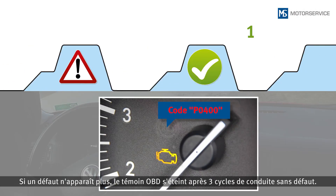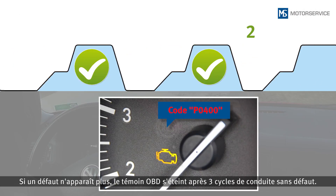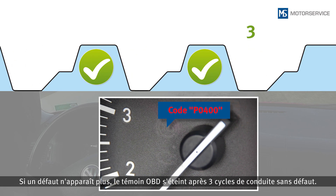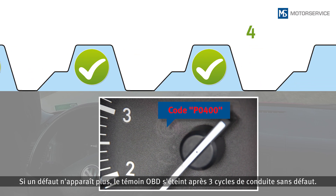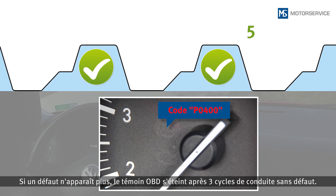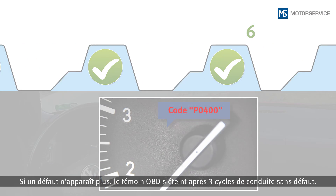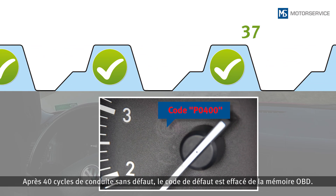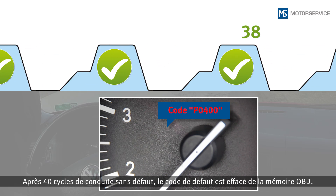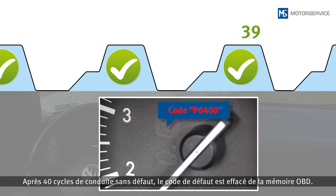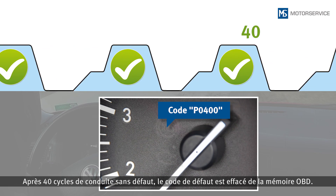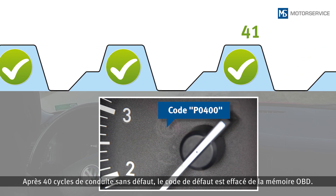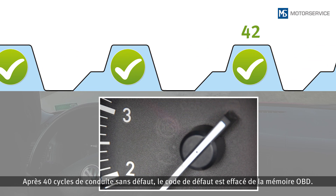If an error does not occur again, the malfunction indicator lamp will go out after three faultless driving cycles. After 40 faultless driving cycles, the DTC is also deleted from the OBD memory.